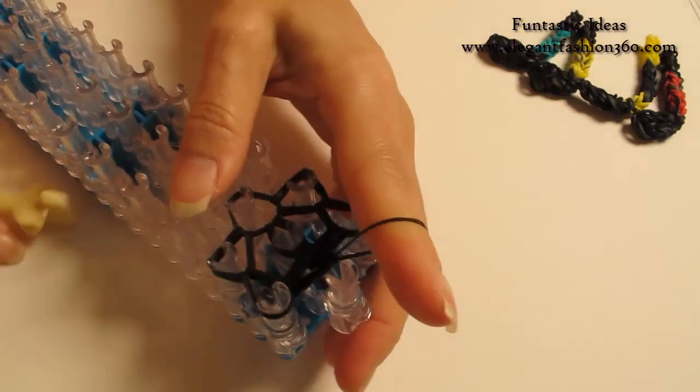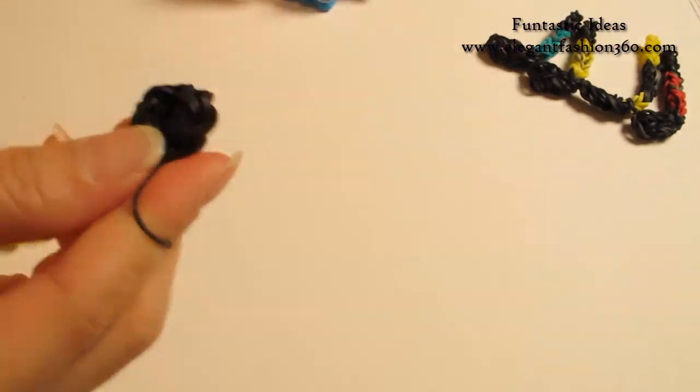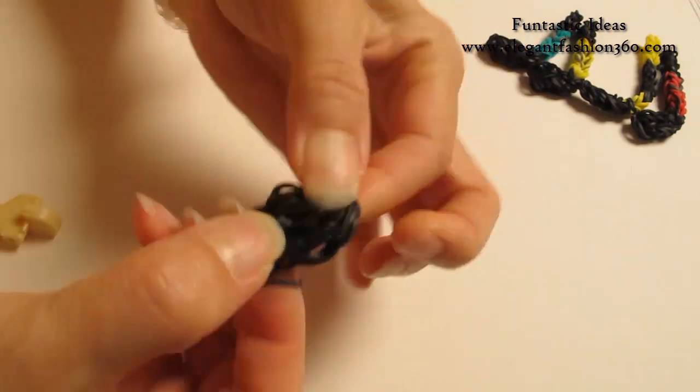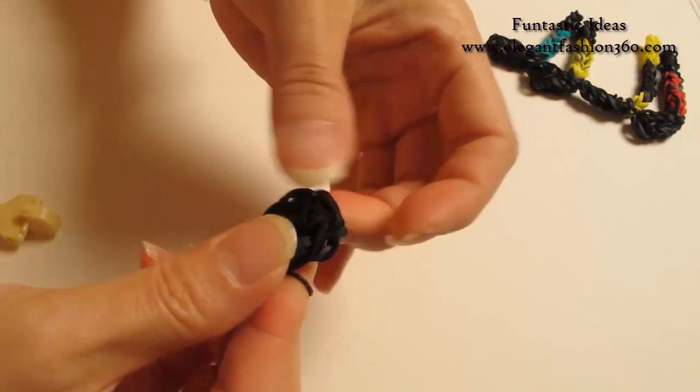You can use your hook to help release the band and then pull it off. When you first pull it off it looks a little bit messy but that's okay, we can just straighten them up a little bit and that will make this circle.